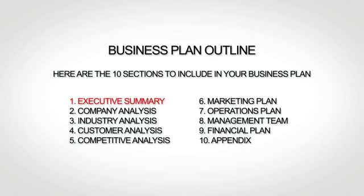The first section is your executive summary, which is essentially the introduction to your business plan. Then the next section is your company analysis, which gives a little more background. Next up is your industry analysis, where you talk about your market and trends. The fourth section is your customer analysis, where you go more in depth about your target market. The fifth section is your competitive analysis, where you provide an analysis of your competition, including what differentiates you from your competitors.